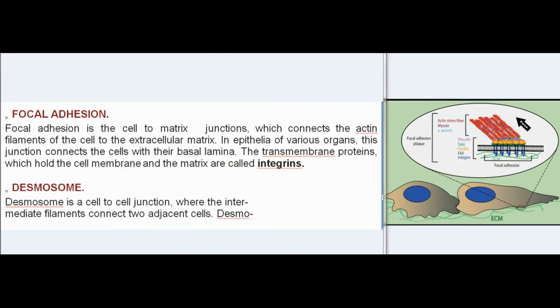Focal adhesion: Focal adhesion is a cell-to-matrix junction which connects the actin filaments of the cell to the extracellular matrix. In epithelia of various organs, this junction connects the cells with their basal lamina. The transmembrane proteins which hold the cell membrane and the matrix are called integrins.